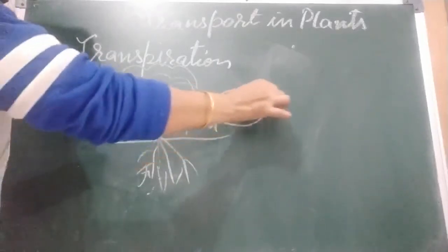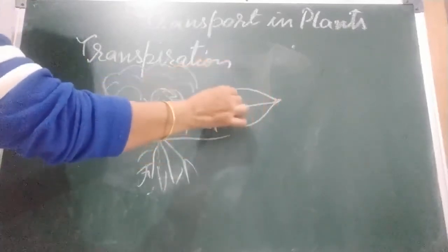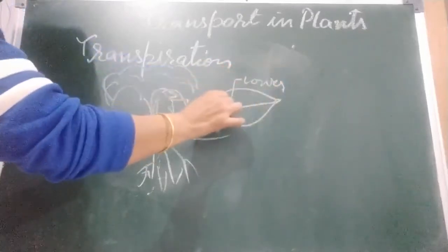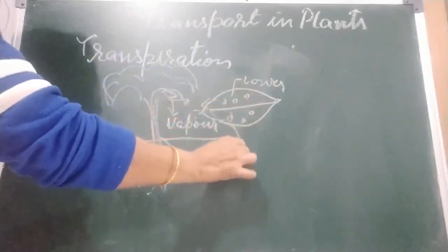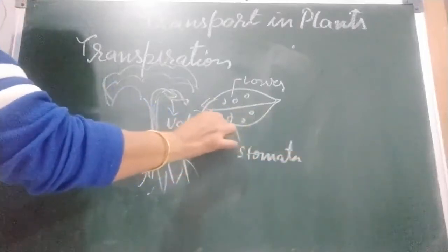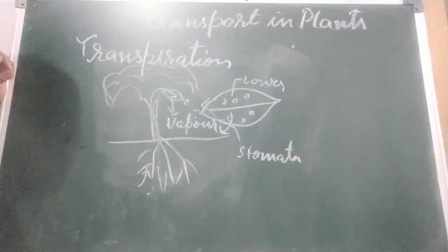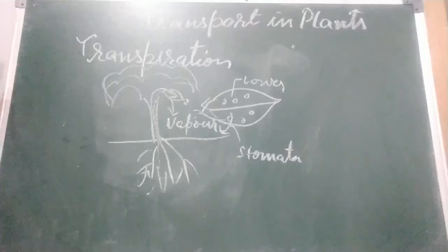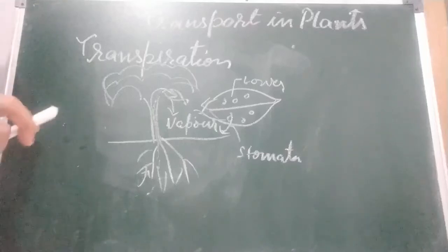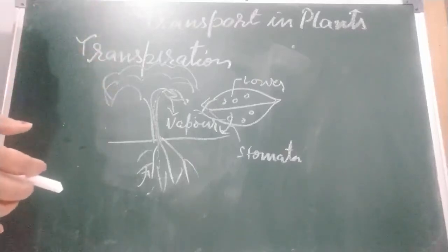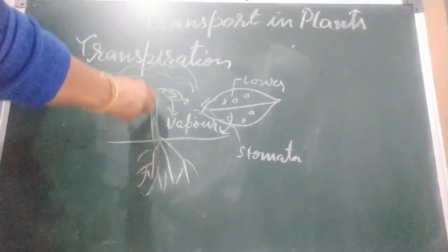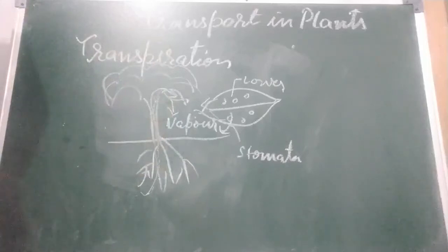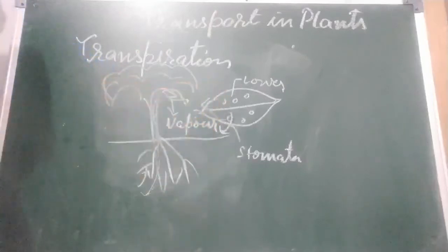The opening and closing of stomata is controlled by the amount of water lost during transpiration. The stomata are tiny holes on the lower side of leaves. During the day, stomata take in carbon dioxide and give out oxygen for photosynthesis. The opening and closing of stomata also depends on water lost during transpiration.